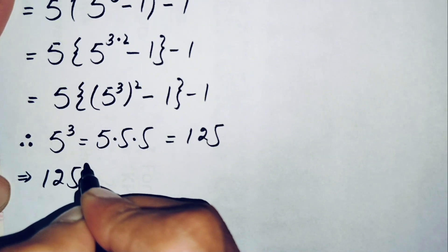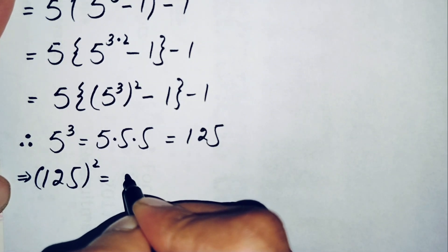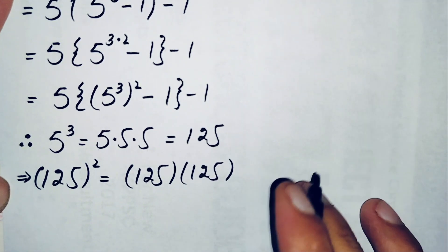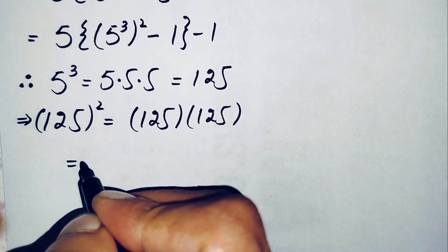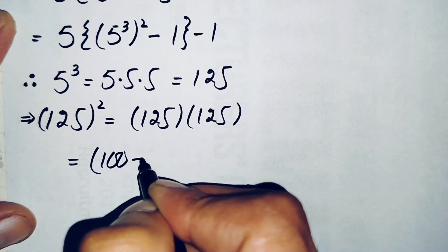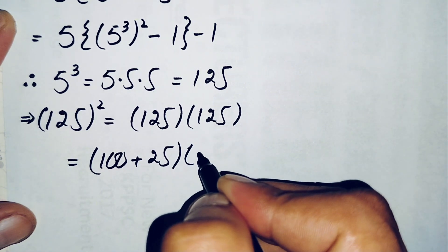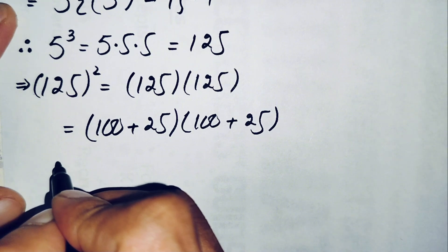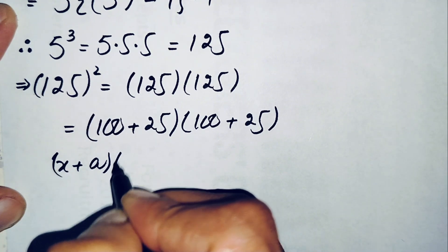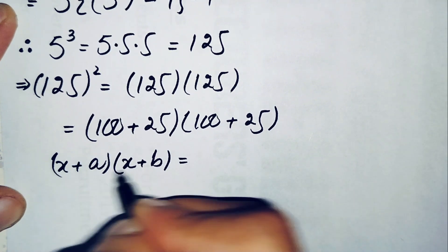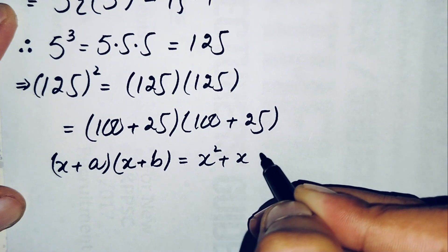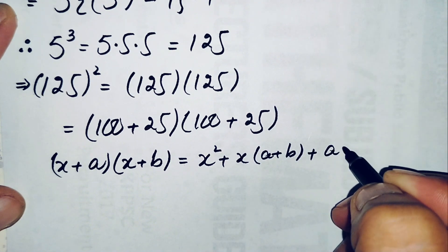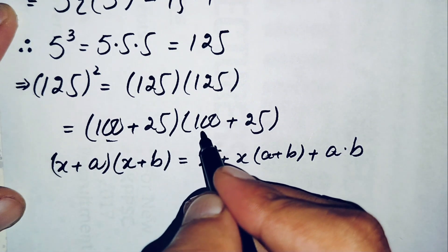125 squared equals 125 times 125. We rewrite this as (100 + 25) times (100 + 25), which is in the form (x + a)(x + b). This product equals x squared plus x times (a + b) plus a times b.